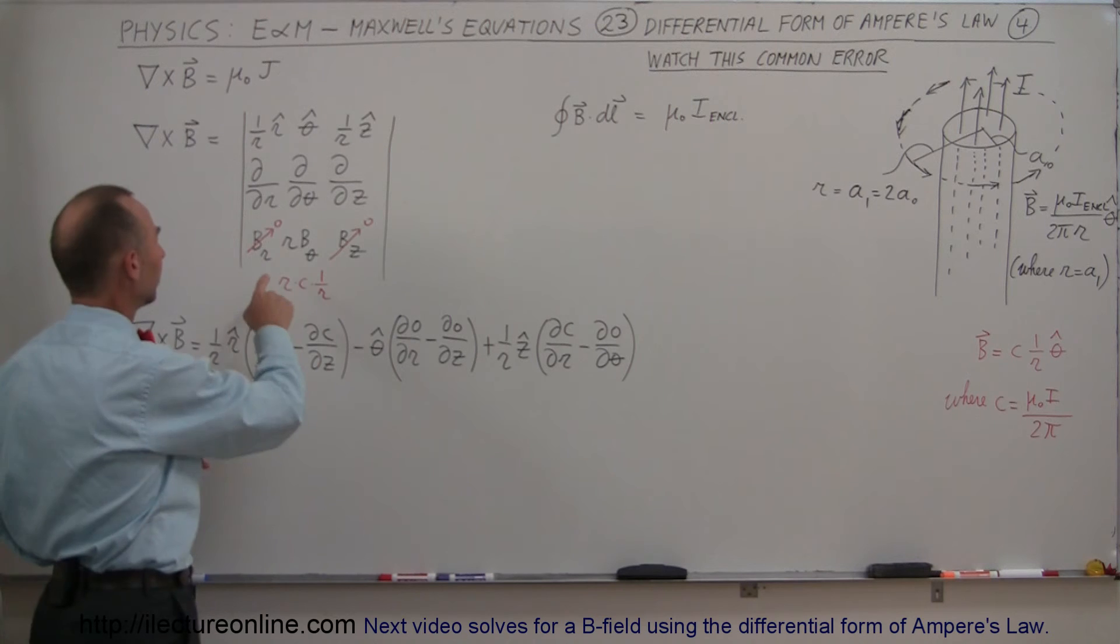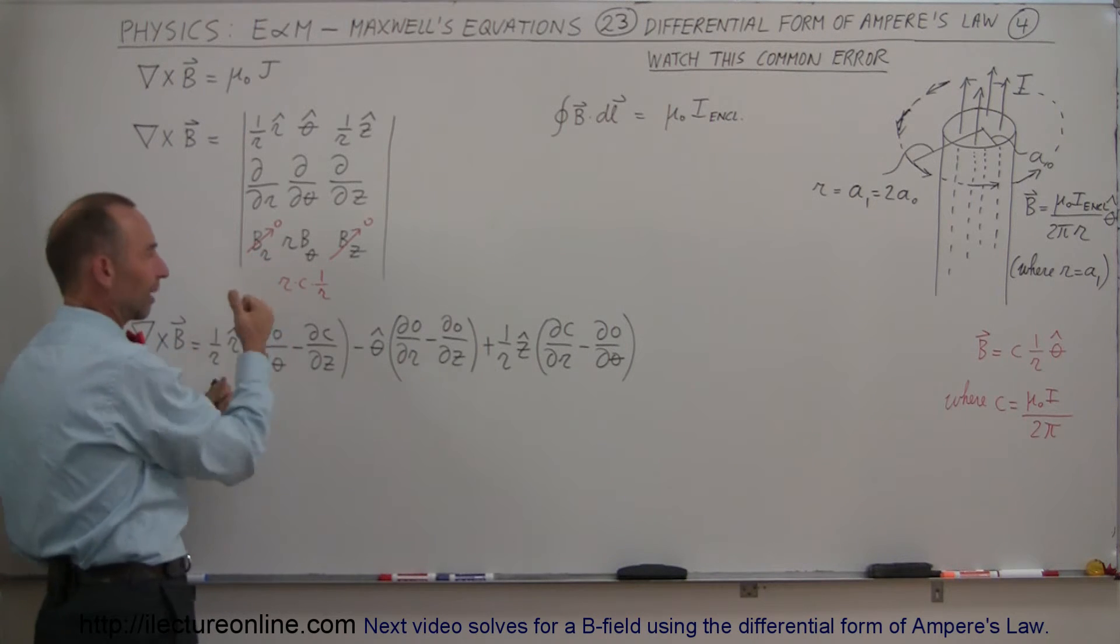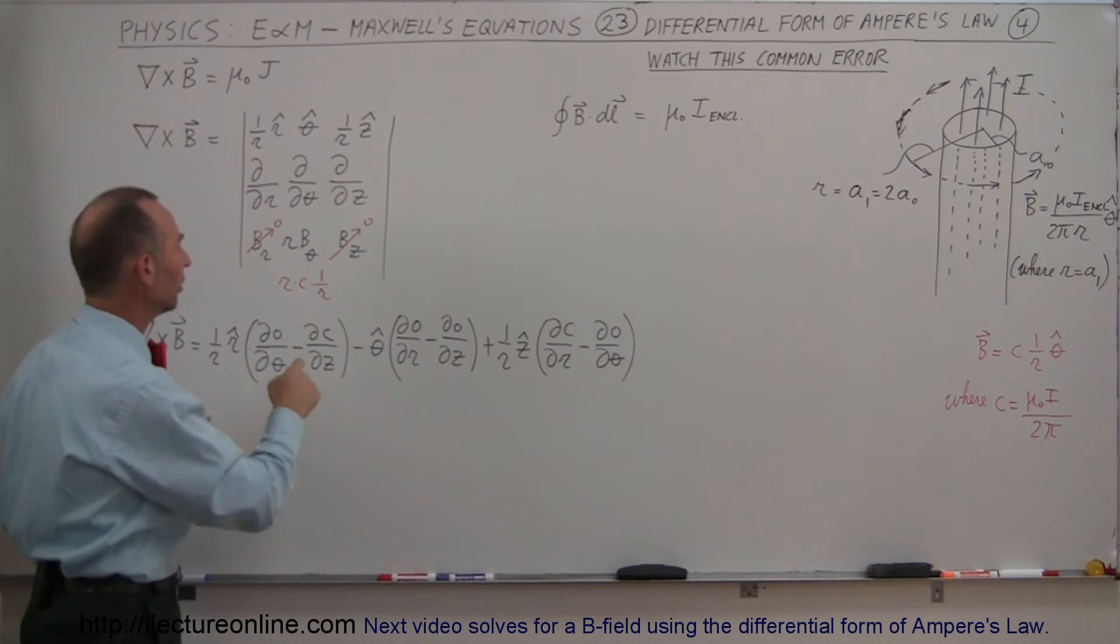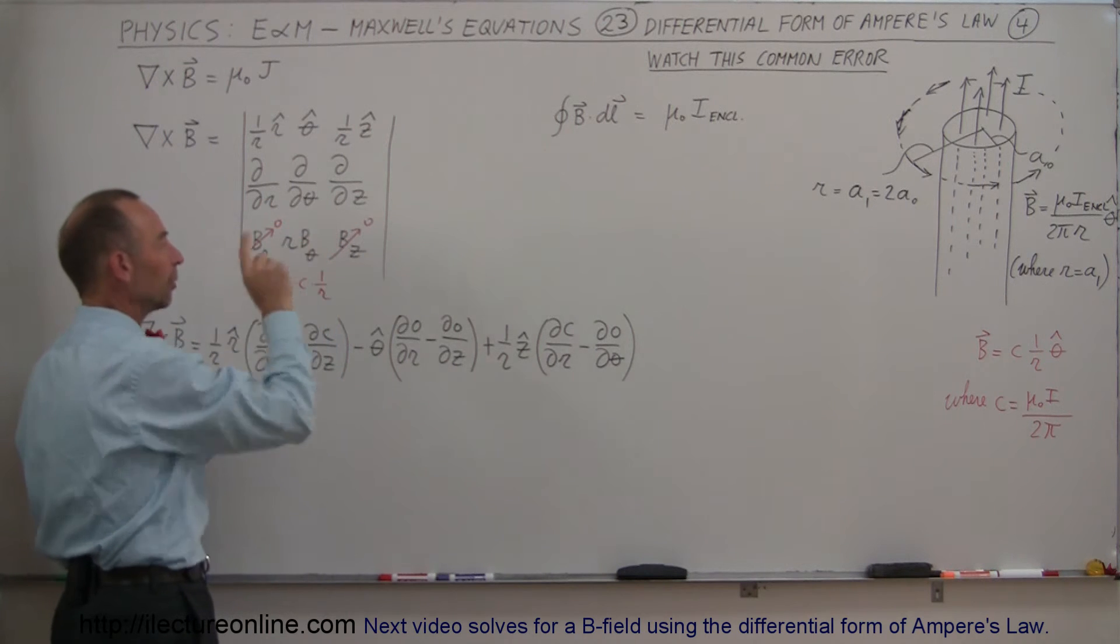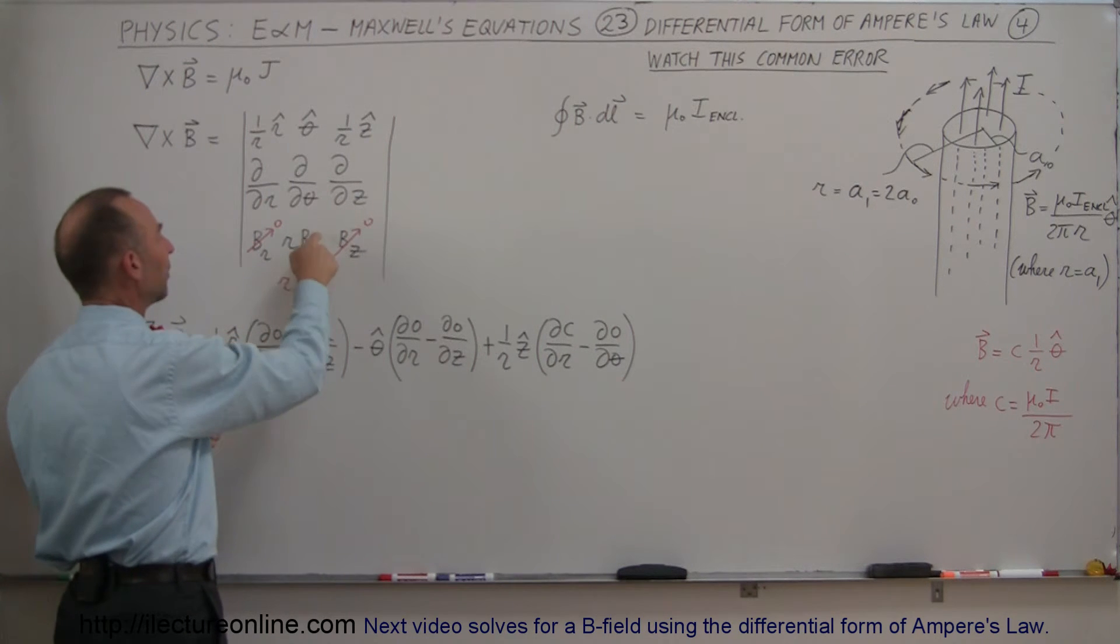Then you realize, of course, that the curl of B is equal to this. And then when you plug in the values, for example, the B field in the r direction—that's really outward—will be zero, and the B field in the up direction, that will be zero as well.